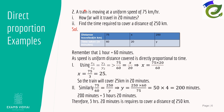Let's take another example. A train is moving at a uniform speed of 75 km/h. How far will it travel in 20 minutes, and what time is required to cover 250 kilometers? Since speed is constant, distance divided by time is constant — this is direct proportion. Uniform speed means constant speed, confirming this is a direct proportion case.